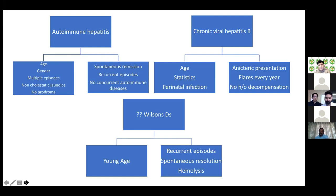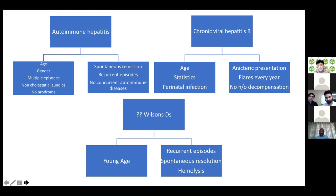BRIC and PFIC were clarified as hypothetical — the case is non-cholestatic. The audience question about how common chronic Hepatitis B flares with clinical jaundice are was acknowledged as a valid point. The discussion reaffirmed that icteric flares in Hepatitis B are uncommon (5-15%), and this was already discussed during the differential diagnosis review.